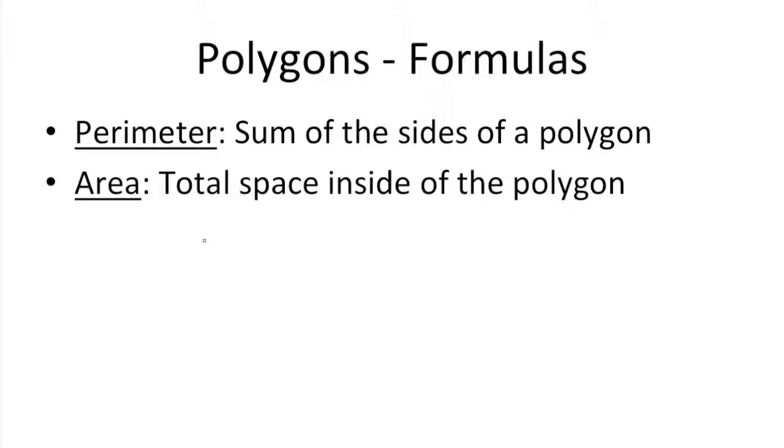You're going to need to know how to figure out the perimeter of shapes as well as the area. The perimeter is just the sum of the sides of a polygon. So if we had a triangle, it would just be X, Y, and Z. Add those three sides up.